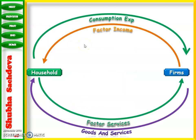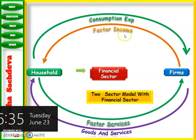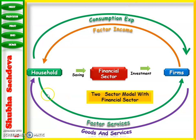In the two-sector model: the household provides factor services (shown in green) to the firms, and the firms pay factor income — rent, interest, salary, wages, and profit — back to the household. The firm then produces goods and services and sells them to the household, who pays consumption expenditure back to the firm. There is also a financial sector where households deposit their savings, and firms take loans or investments from the financial sector to invest in their business. This is our two-sector model with a financial sector.